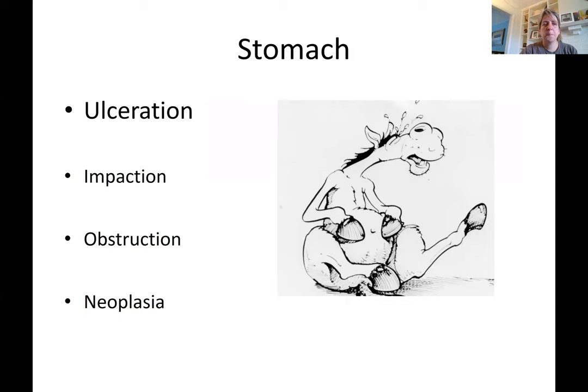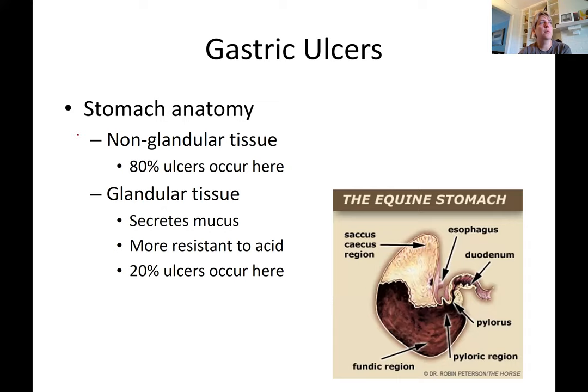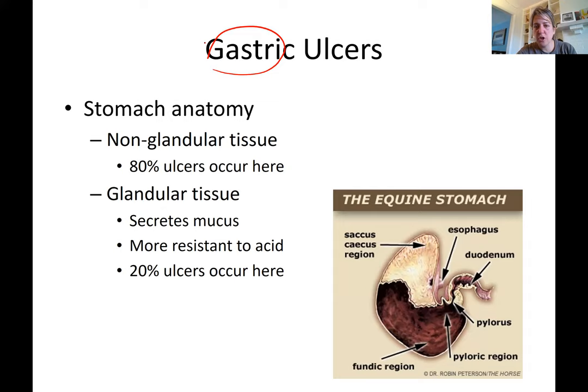We're going to talk about an overview of a lot of things. The GI tract starts in the mouth, goes to the esophagus, stomach, intestines, and exits at the rectum and anus. We're going to talk about different sections of the GI tract, and starting with the stomach, one very common condition is gastric ulcers. Gastric obviously means stomach, so we need to remember the stomach anatomy.